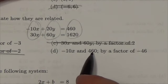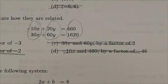Negative 10x and 460 - well, again, those aren't like terms. So it can't be that one.